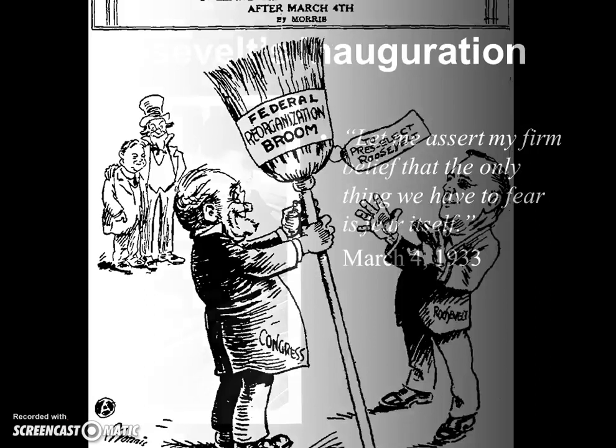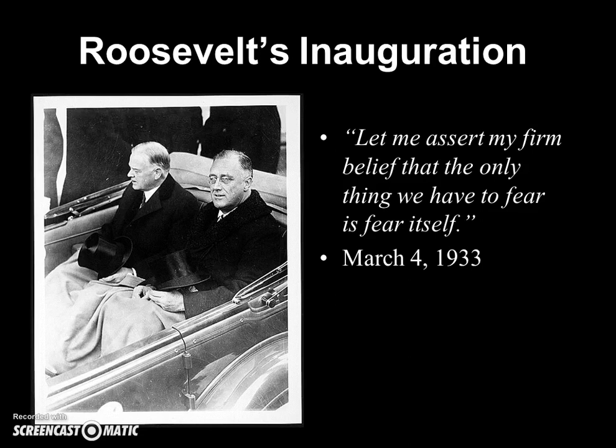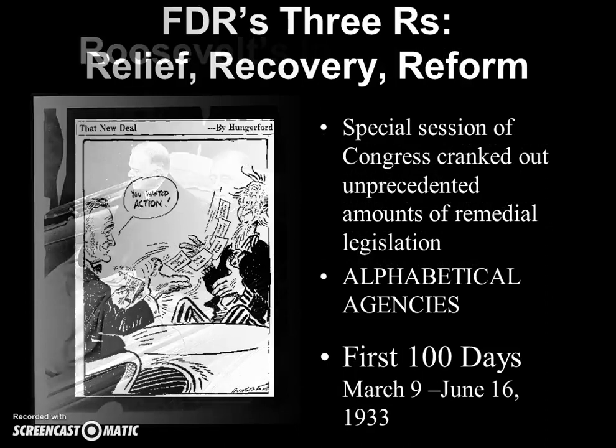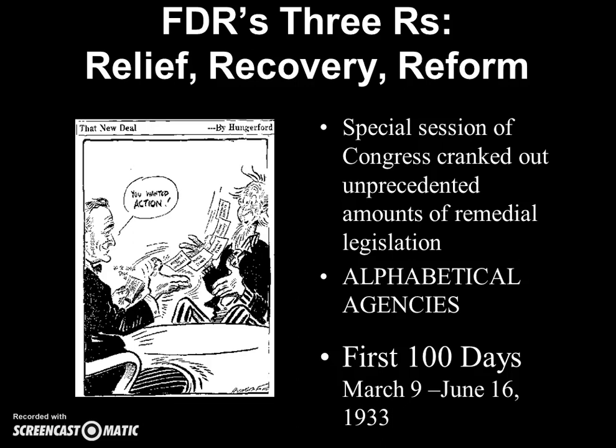Sweeping changes were expected after March 4th, Inauguration Day. FDR's New Deal was based on the three R's: relief, recovery, and reform. He called a special order of Congress to begin cranking out unprecedented amounts of legislation — these are known as the alphabet agencies. In his first hundred days, he tried to do anything he could to correct the Great Depression, and now we judge all presidents by what they accomplish in their first hundred days.